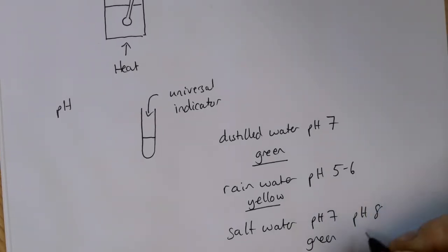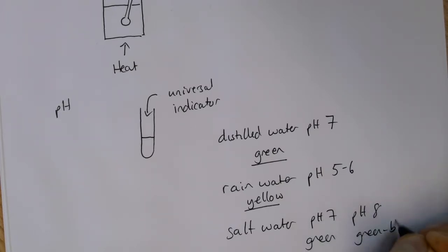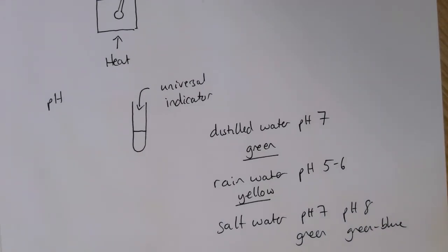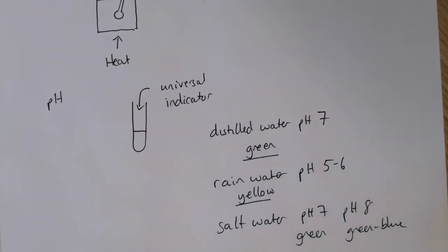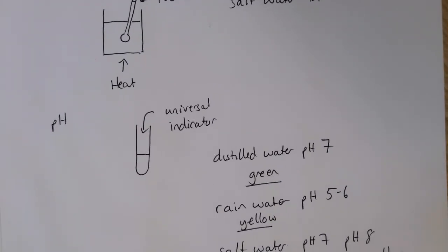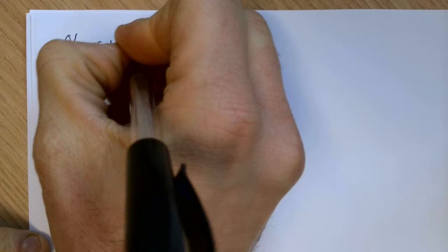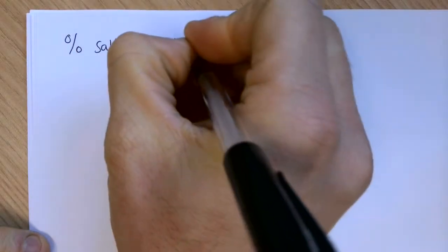Adding universal indicator to find the pH of our samples can give us some indication of the purity, but there are some examples of pure salt water samples that will also have a pH of 7. The main part of this video is actually for us to have a look at how we would find the percentage of salt in a salt water sample.